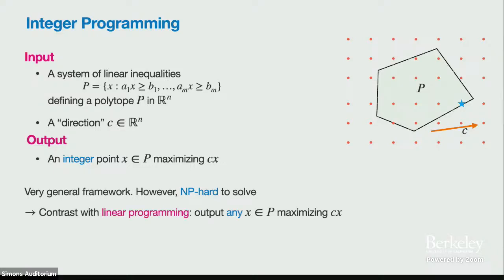You should contrast this with linear programming, which is essentially P-complete. In linear programming, rather than outputting an integer solution, we just want to output any solution in the polytope — the one on the polytope boundary in the given direction.